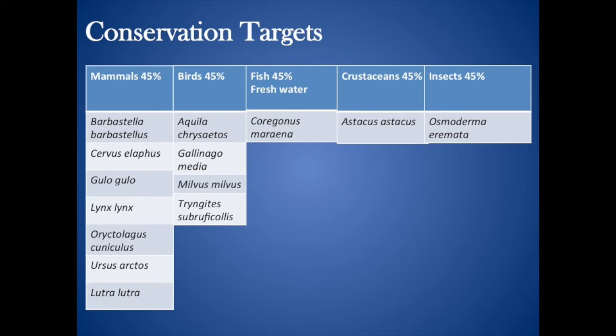Many of these species are endemic to Sweden and are found nowhere else in the world. Species that are considered threatened at the European level and occur in Sweden are found mostly in grasslands, forests and wetlands. These ecosystems require particular attention in order to ensure the habitats of these sensitive species remain.